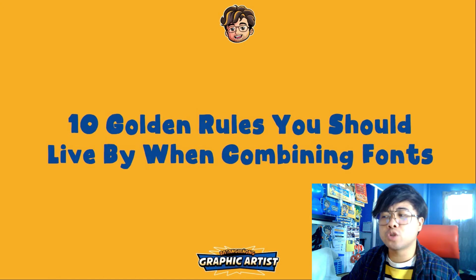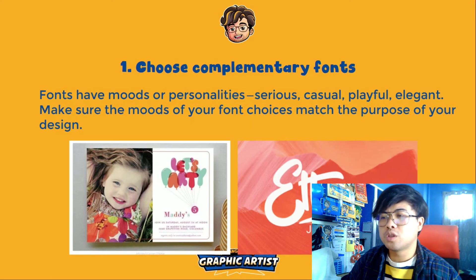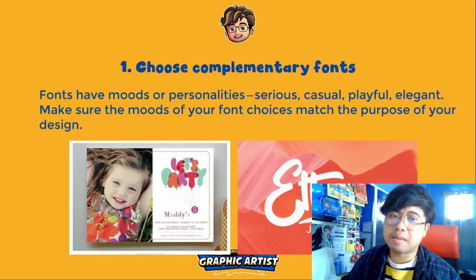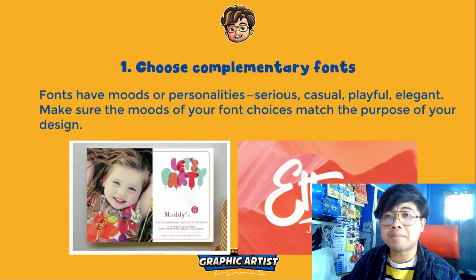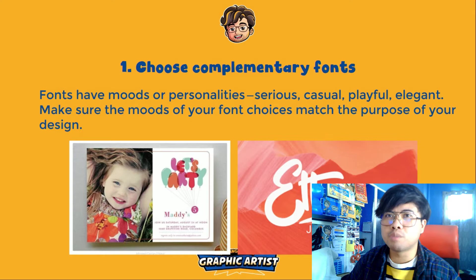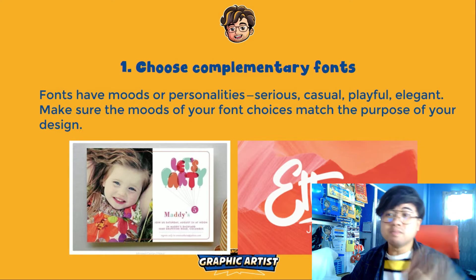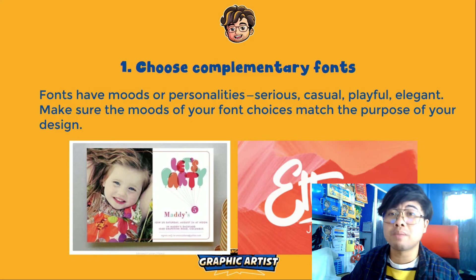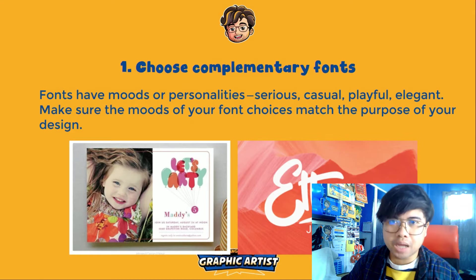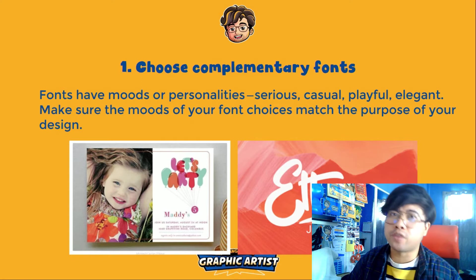Ten golden rules for combining fonts. Rule one: choose complementary fonts. Fonts have moods or personalities. The fonts you choose depend on the event or theme — for a birthday party, use bubbly, rounded, playful fonts like balloons. Avoid using dripping blood fonts for a birthday party, as that would be inappropriate. Choose fonts that complement the event or project you are making. Rule two: establish a visual hierarchy, which connects back to tip number two — size matters. Give emphasis to the words or sentences you want seen first.